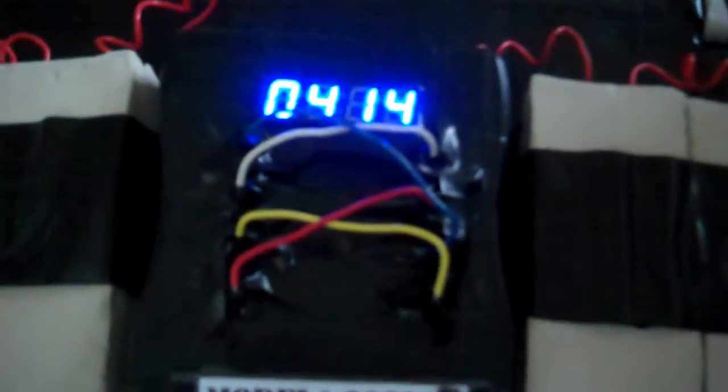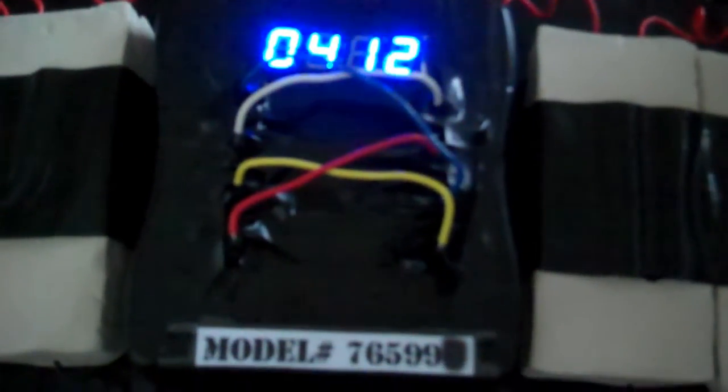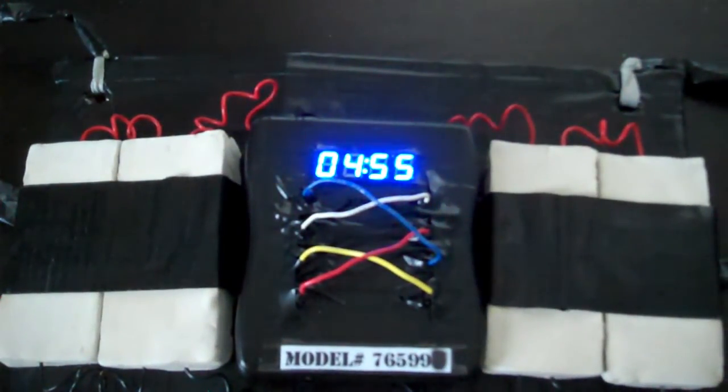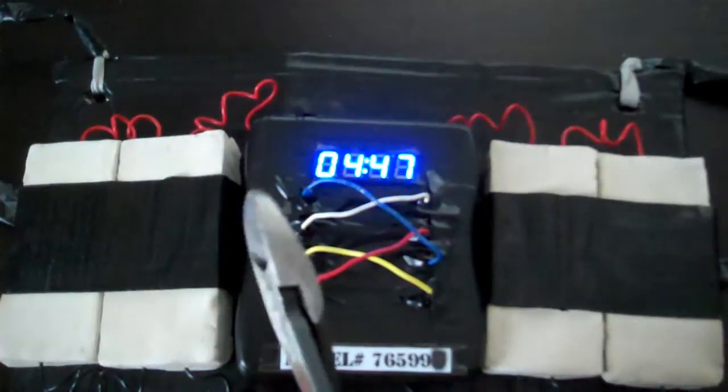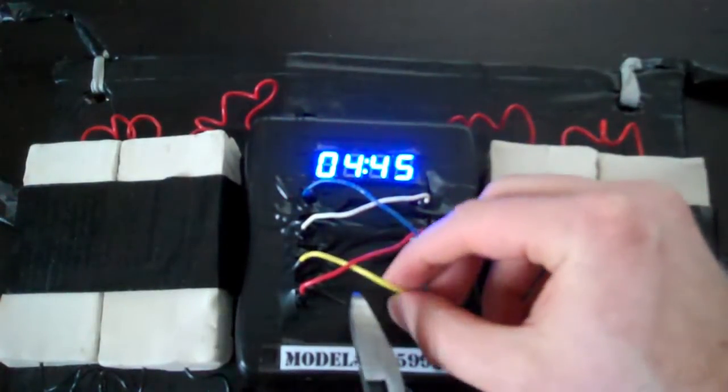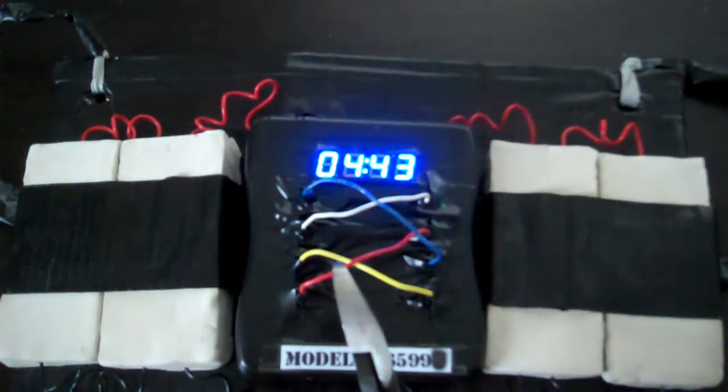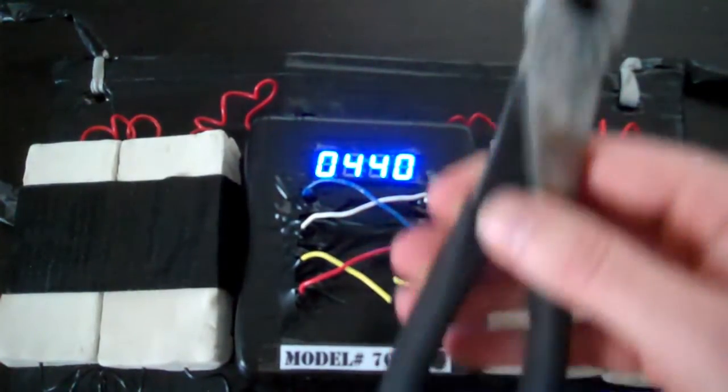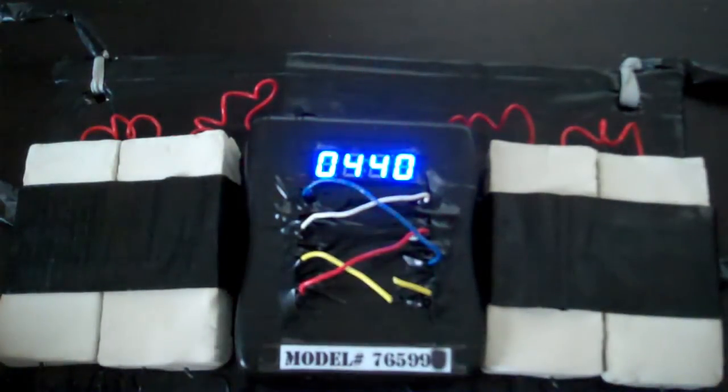And that's about it. Okay, so you can see here that the bomb is currently counting down. What we're going to do here is we're going to cut the correct wire and see what happens. So the correct wire is the yellow wire according to the schematics. So if we go ahead and cut that, you hear that triumphant sound, and the people correctly diffused the bomb.